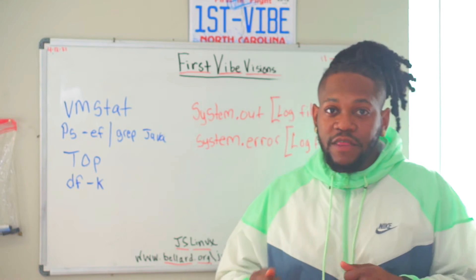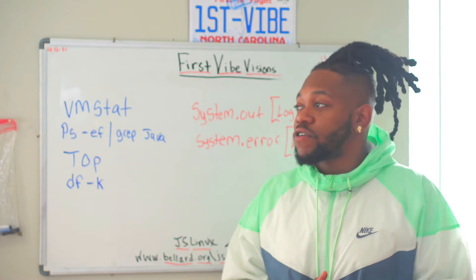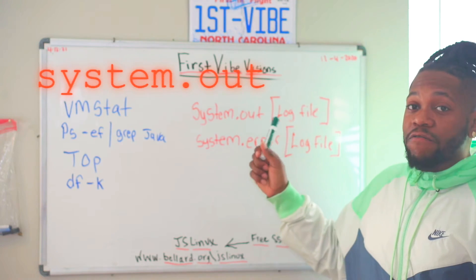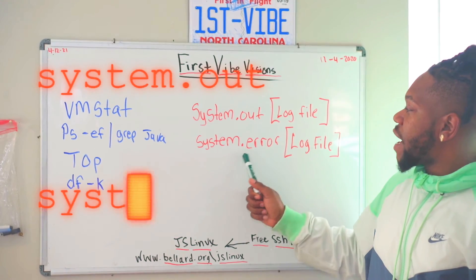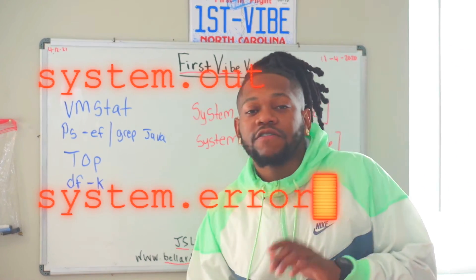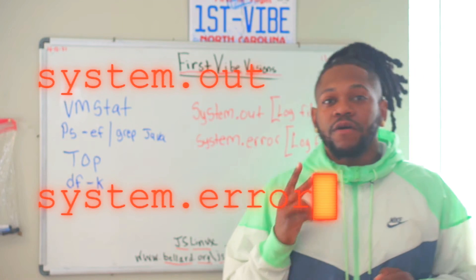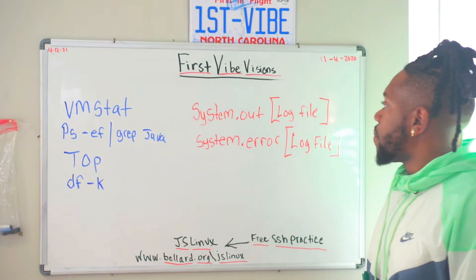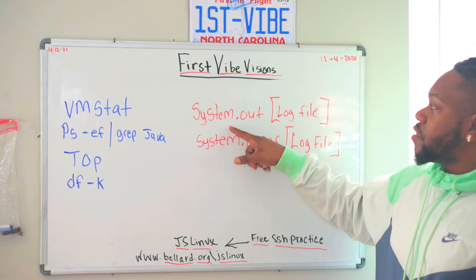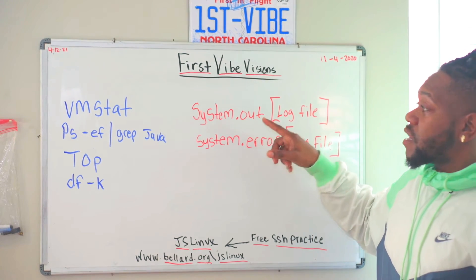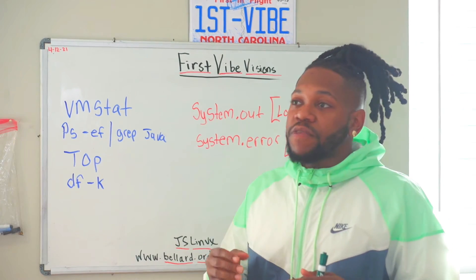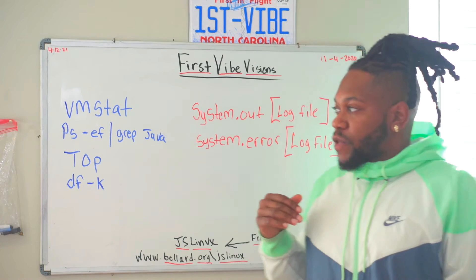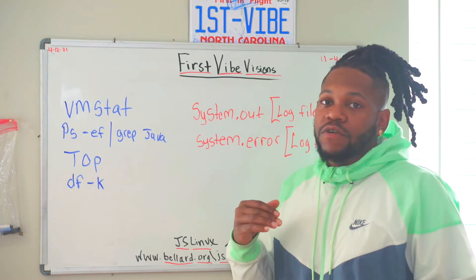Once you go inside that server, you authenticate and log in. What you want to do is look at your system.out log file and your system.error log file. These are two important system files. They show you what type of output your system is putting out, and it captures that in these things called log files, which is basically a text file.